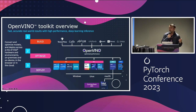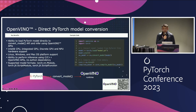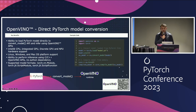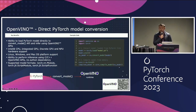Now let's talk about PyTorch and how you can use your PyTorch models with OpenVINO. OpenVINO allows you to directly load your PyTorch models and conduct inferencing using the OpenVINO APIs. OpenVINO has an API called ConvertModel. This API takes your PyTorch model, converts it inline behind the scenes to an OpenVINO intermediate representation format, performing graph optimizations on the model. It then feeds the result to the OpenVINO runtime where actual inferencing deployment happens on your chosen hardware target.